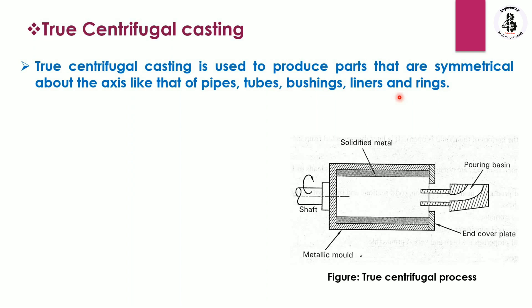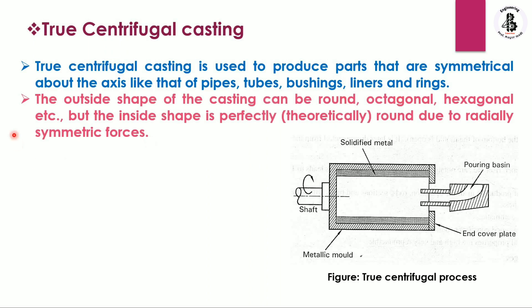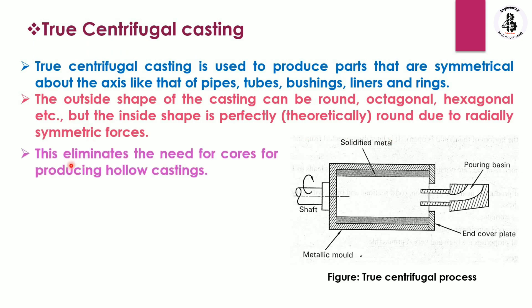The outside shape of the castings can be round, octagonal, hexagonal, etc., depending on requirements. But the inside shape is perfectly round due to the radially symmetrical centrifugal forces. This eliminates the need for cores for producing hollow castings — no core is used. With the application of centrifugal force, hollow castings are made, totally eliminating the core and core-making processes.